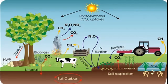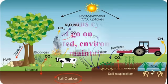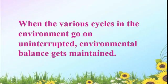There are several other such cycles in nature. There is interaction amongst living things and between living and non-living things in nature, and these interactions go on continuously. This helps to maintain the food chains in the environment. When the various cycles in the environment go on uninterrupted, environmental balance gets maintained. We studied the water cycle, nitrogen cycle, oxygen and carbon dioxide cycle — so many different cycles are there in our environment.